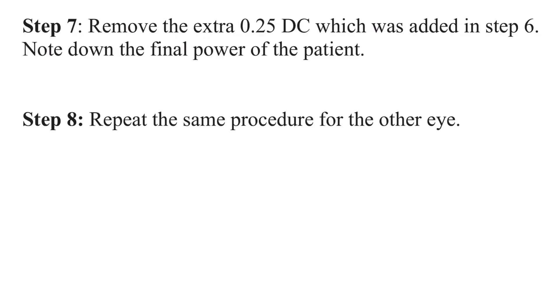Step seven is to remove the extra 0.25 diopter cylinder that was added in step six and note down the final power of the patient. The last step is to repeat the same procedure for the other eye.